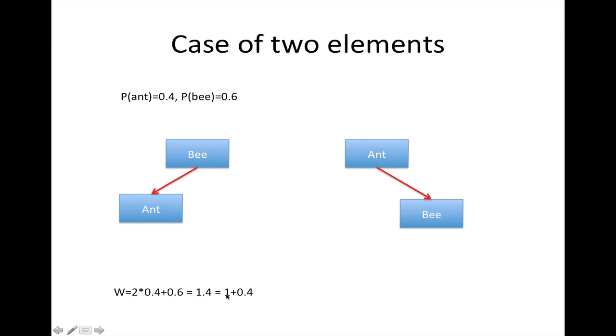Or differently, we can say it's 1 because with probability 1 we compare to bee, and with probability 0.4 we go down and compare to ant. Similarly, with the other order we get 1.6. Because 1.4 is smaller, this is the better order, which makes sense because bee is more probable, so we want to put it at the root.